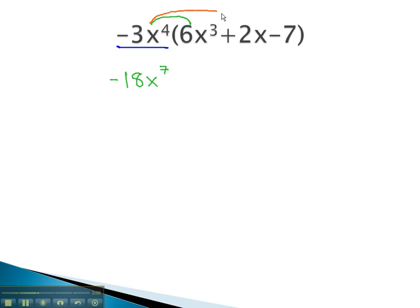Continuing to distribute, negative 3x to the 4th times 2x is negative 6x³. Whoops, negative 6x to the 5th, 4 plus 1.